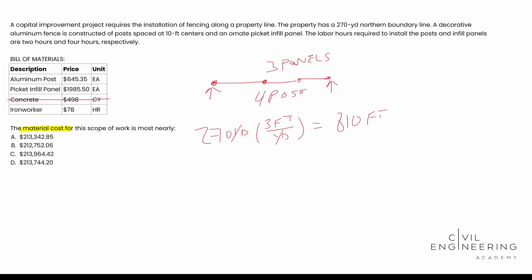And so with that, what we can do is we can do the 810 feet and we can divide that by 10 feet per post, right? Cause that's what it says in the problem. We have 10 feet per post, off on centers, right? So when we do that, you end up with 81 posts.